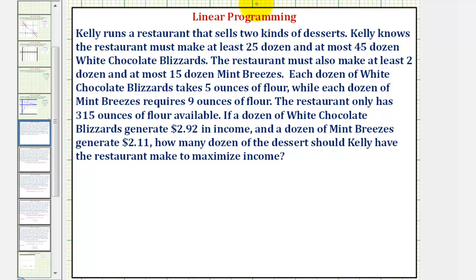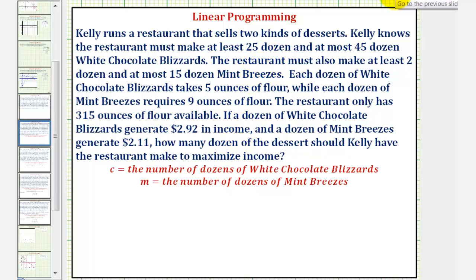We'll be solving this problem using linear programming, so our first step will be to define the variables which represent the number of dozens of each dessert. We'll let C equal the number of dozens of white chocolate blizzards, and we'll let M equal the number of dozens of mint breezes. Our ultimate goal here is to maximize the income, so for the next step, let's write the income equation, which is also known as the objective equation or objective function.